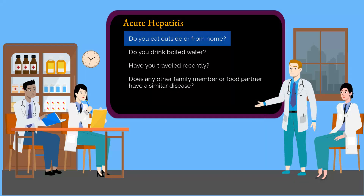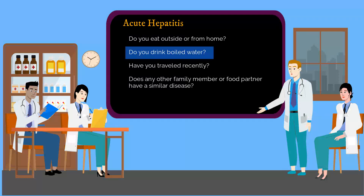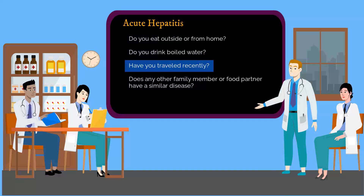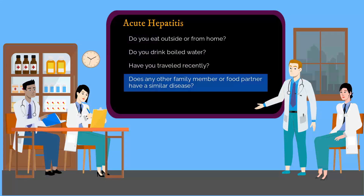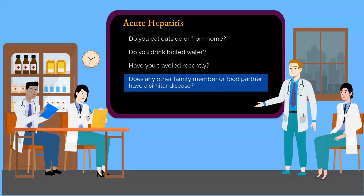Do you eat outside or from home? Do you drink boiled water? Have you traveled recently? Does any other family member or food partner have a similar disease?